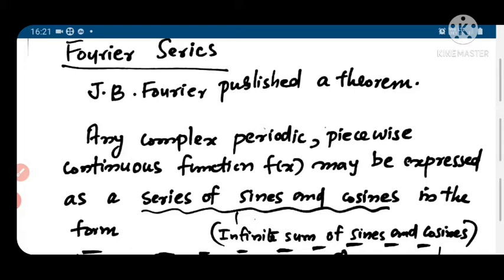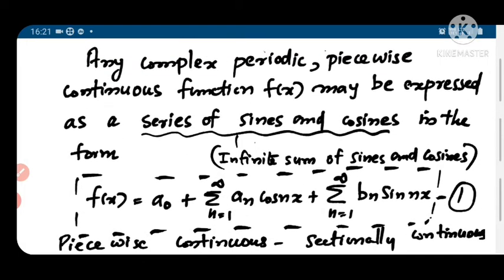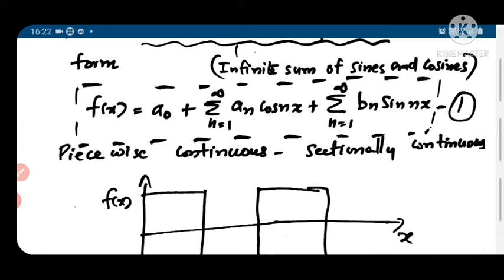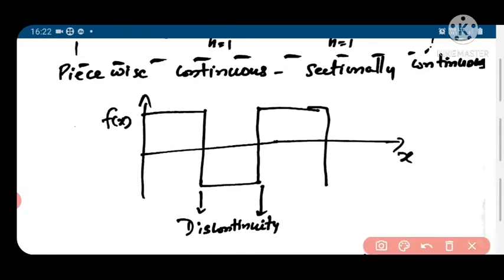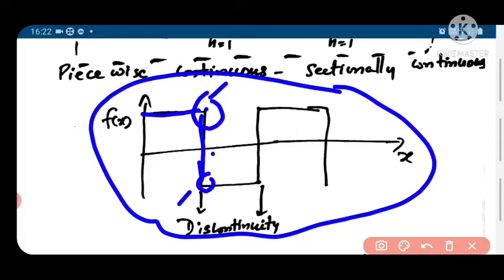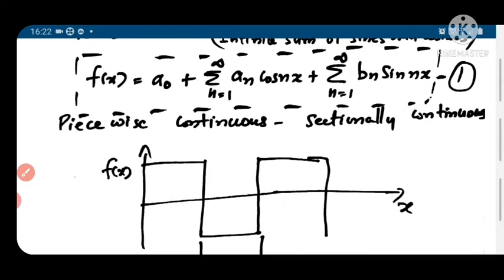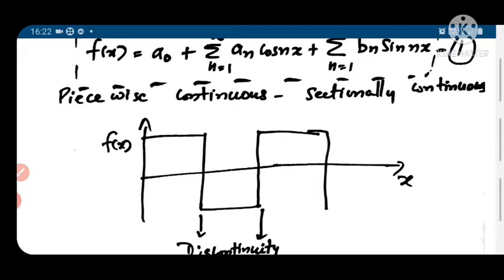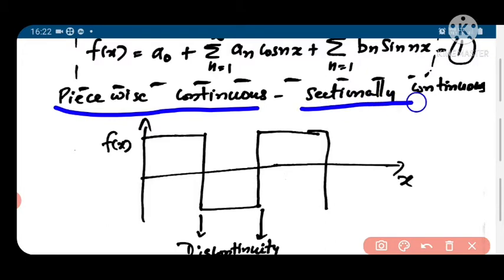This is the Fourier theorem put forward by Fourier: any function can be expressed as an infinite sum of sines and cosines. An example of a piecewise continuous function is shown here. It is continuous in parts, but a discontinuity appears at certain points where the function has two values. It is discontinuous only at those two points; at other points it is continuous, so we call it piecewise or sectionally continuous.